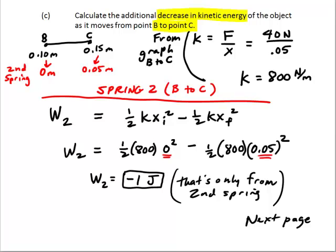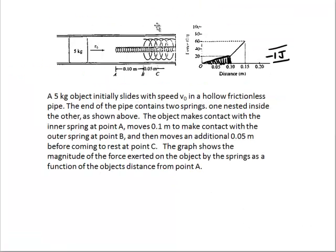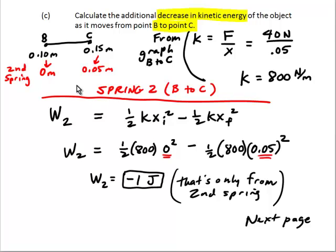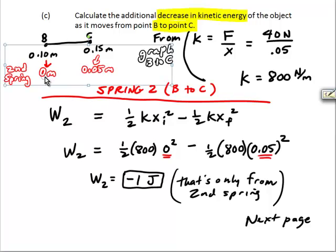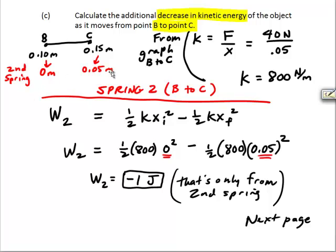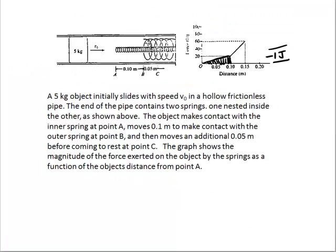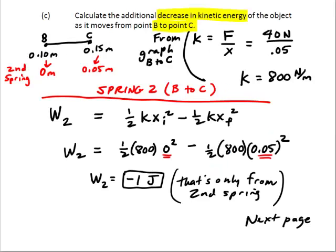Now, part C, we want to decrease in energy from B to C. I took spring 2 first. Spring 2 is the new spring right here. Now, it's not stretched at all. And that's important because you have to look at that spring as going from 0 to 0.05 meters, not 0.1 to 0.15 meters. If you put 0.1 to 0.15 meters, the reason that's incorrect is because it is not compressed at all right now. You're thinking of the other spring. Common mistake.